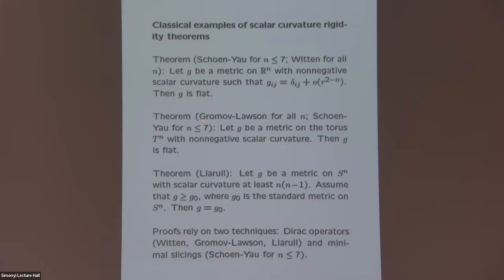In both of these results, what you're really doing is comparing a metric to a model metric — in the first case the flat Euclidean metric, in the second case the flat metric on the torus — and then making an assumption concerning the sign of the scalar curvature. These results are very subtle because scalar curvature, among all invariants considered in geometry, is the weakest one. Assumptions on sectional curvature or Ricci curvature are much stronger, and that makes these questions subtle because there are very few techniques available.